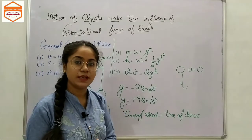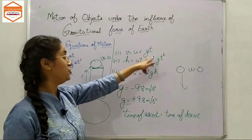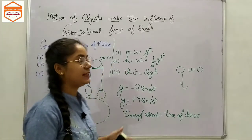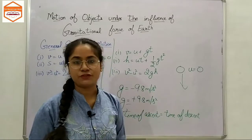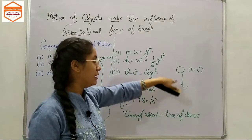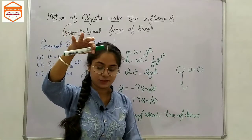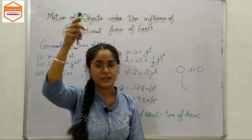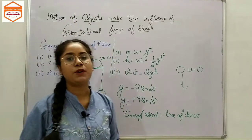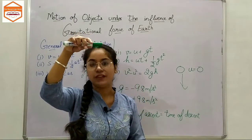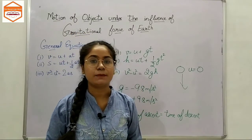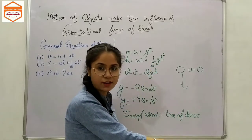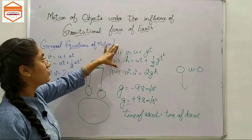We have discussed V, U, G, and T in the rules, but let's also talk about H. The distance covered by a freely falling body is always directly proportional to the square of the time of the fall.